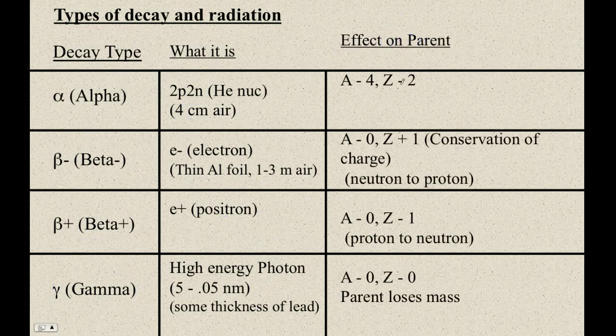And then this is the effect that the decays have on the parent. Since a helium nucleus is two protons, two neutrons, you've lost, the atomic mass number goes down by four, and the proton number goes down by two because it's two protons. And then two plus two is four of those.